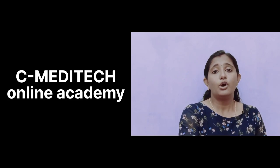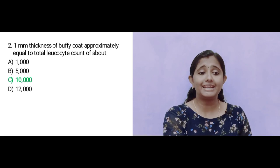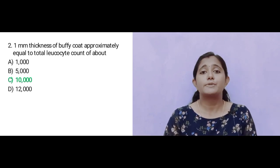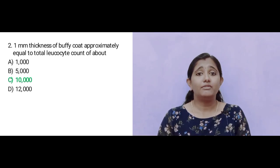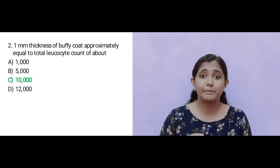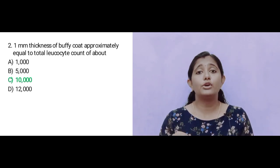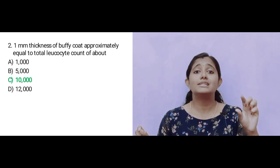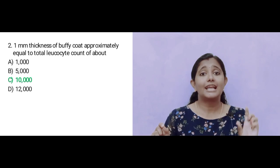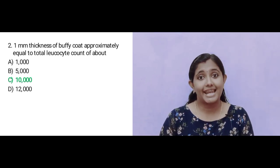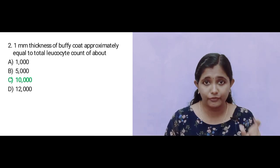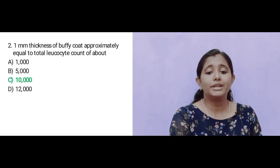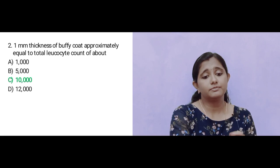Question number 2: 1 mm thickness of Buffy coat approximately equals a total leukocyte count of above — Option A: 1,000; Option B: 5,000; Option C: 10,000; Option D: 12,000. Every millimeter of Buffy coat equals 10,000 leukocytes. So the answer is Option C: 10,000.